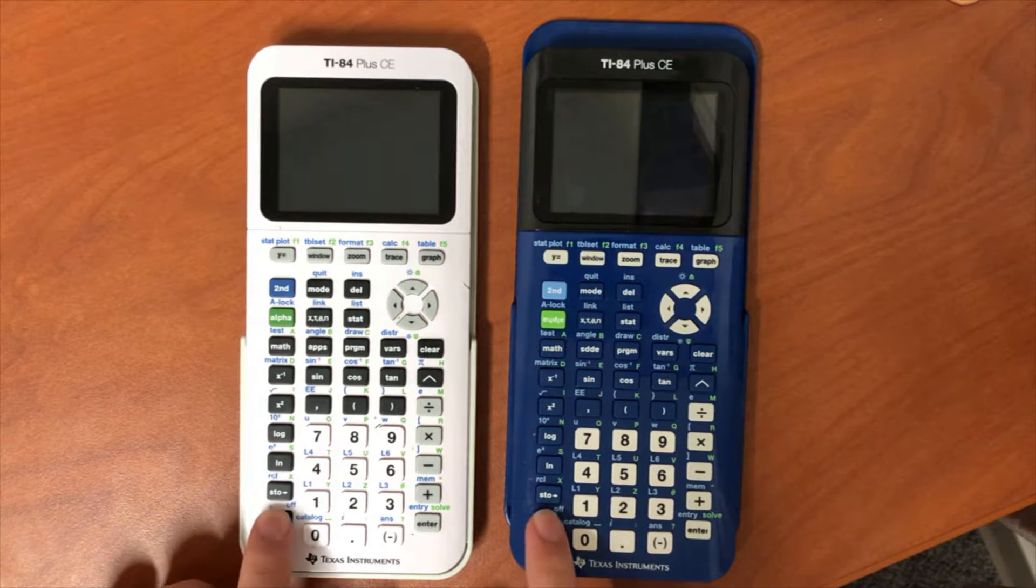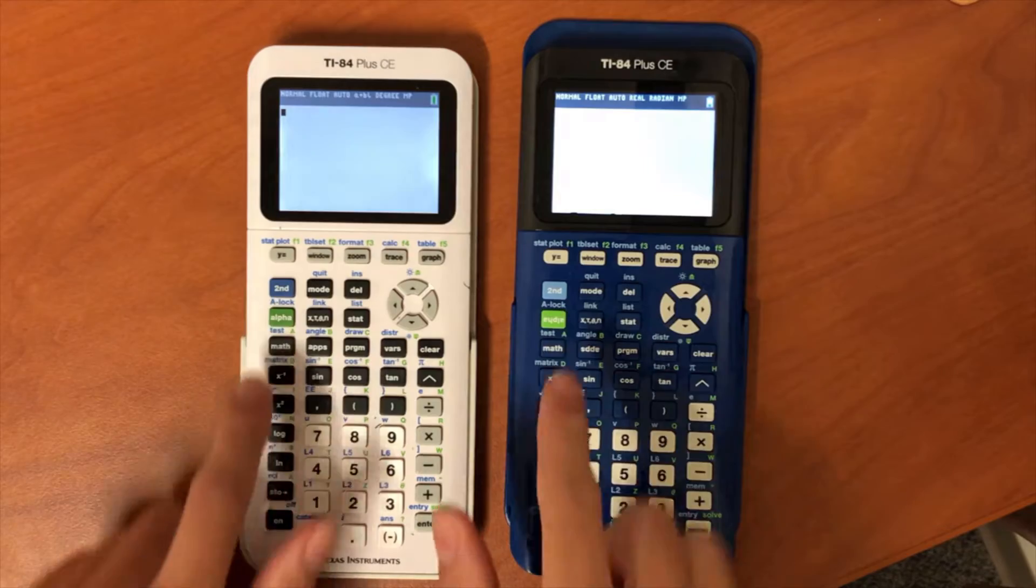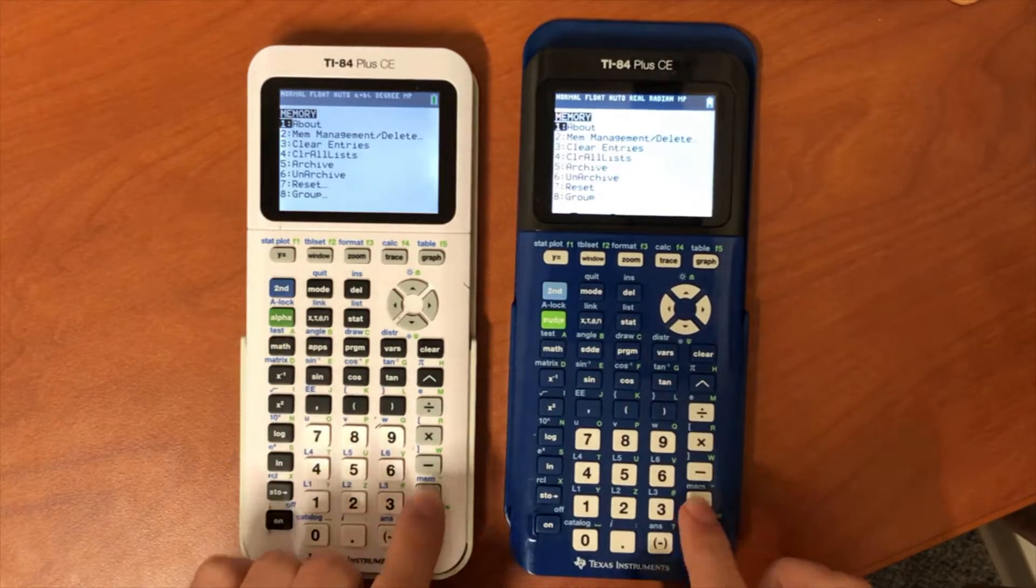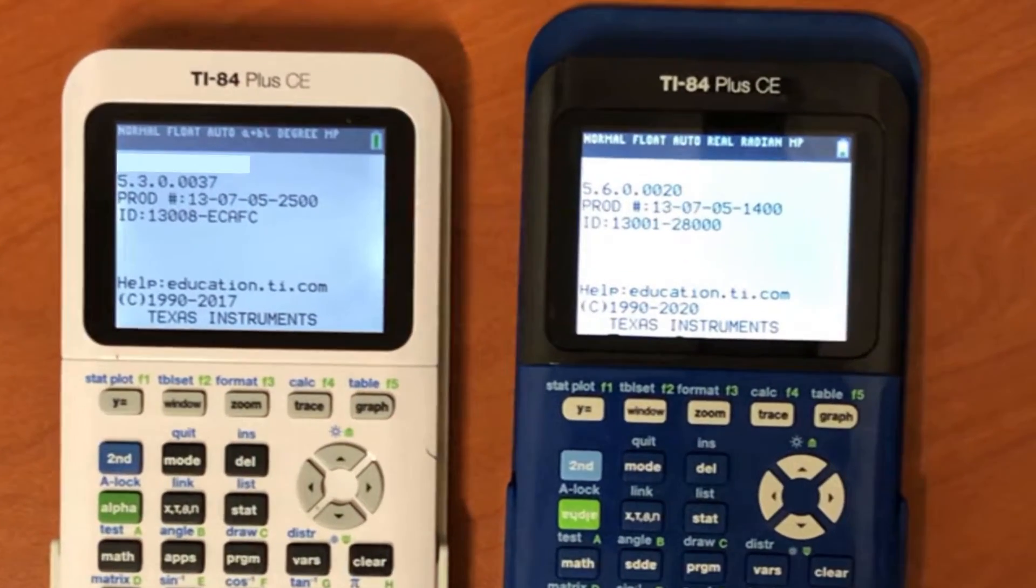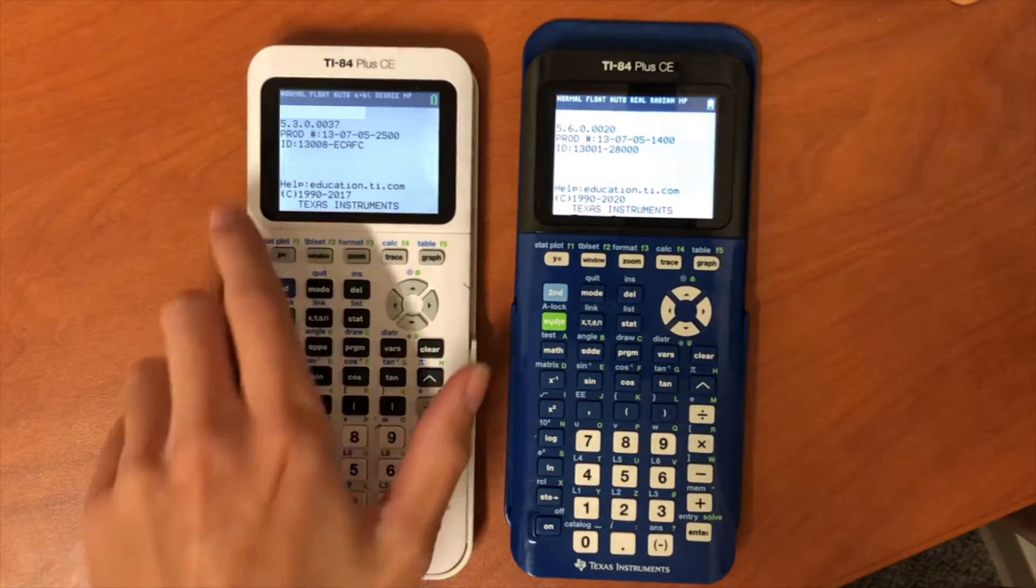First you'll need your calculator which should be running OS 5.5 or higher. Press 2nd, plus, then 1 to see your OS version. Versions lower than OS 5.5 already support ASM, so no jailbreak is necessary.